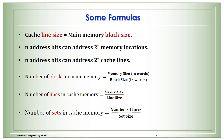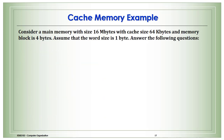Key formulas: n address bits can address 2 to the power n memory locations, and similarly for cache lines. To calculate the number of blocks in main memory, divide the memory size in words by the block size in words. To calculate the number of lines in the cache, divide the cache size by the line size. To calculate the number of sets, divide the number of lines by the set size.